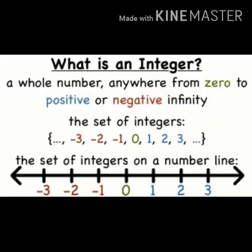The next definition is integers. What is an integer? A whole number anywhere from 0 to positive or negative infinity. The set of integers is represented as: minus 3, minus 2, minus 1, 0, 1, 2, 3, and so on.